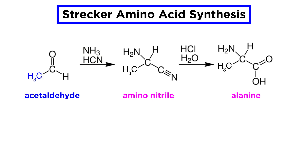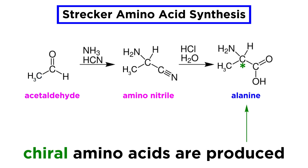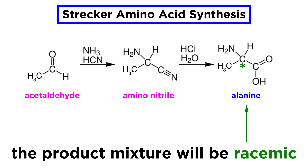When the synthesis is applied to higher aldehydes such as acetaldehyde, a chiral amino acid is formed, in this case alanine. Of course, with this reaction the product is racemic, meaning an equal mixture of the R and S enantiomers, because the reaction is not supported or catalyzed by a chiral template or catalyst.